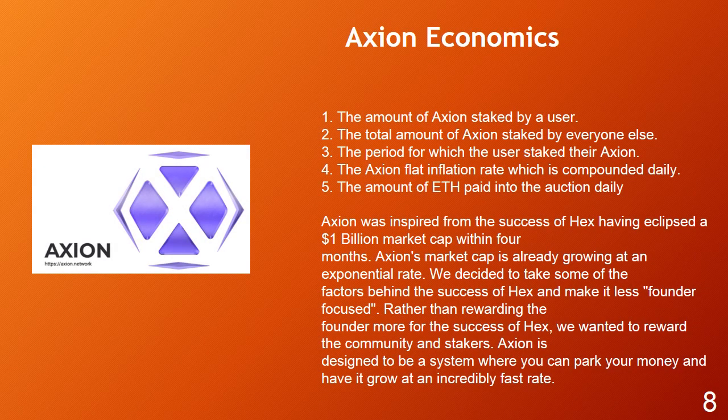Axion Economics. Axion generates interest through the idea of inflation. The Axion smart contract pays out Axion to reward stakers based on 5 basic principles: 1) the amount of Axion staked by a user; 2) the total amount of Axion staked by everyone else; 3) the period for which the user staked their Axion; 4) the Axion flat inflation rate, which is compounded daily; and 5) the amount of ETH paid into the auction daily.